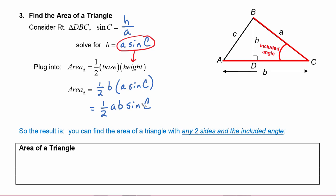So the big result of this is that you can find the area of a triangle as long as you have any two sides and the included angle of those two sides.